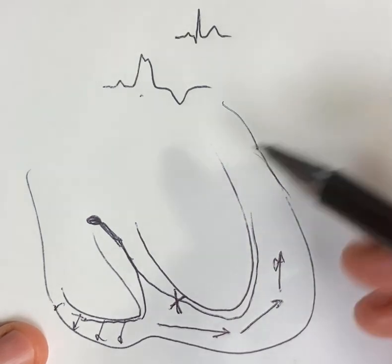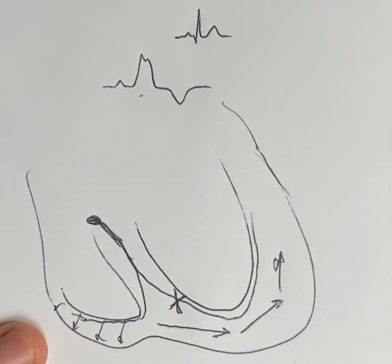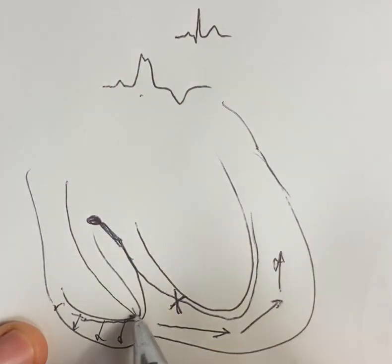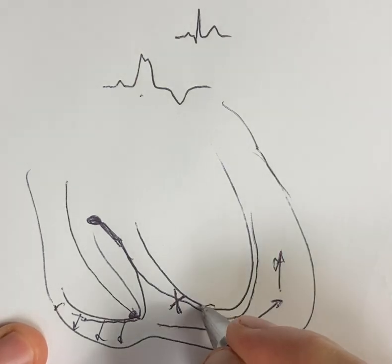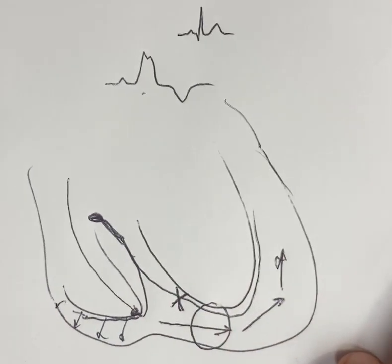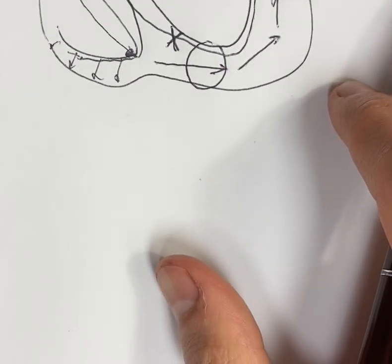But let's look at why the T wave then is affected also. By the way, in a right ventricular paced situation, it's a very similar scenario. So let's take this chunk of myocardium and blow it up just like we did before.